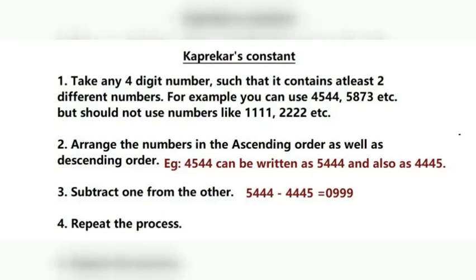In 4544, we have two different digits: 4 and 5. And in 5873, we have all four digits different. Now, what we are going to do with these numbers is first arrange the digits in ascending order as well as descending order.